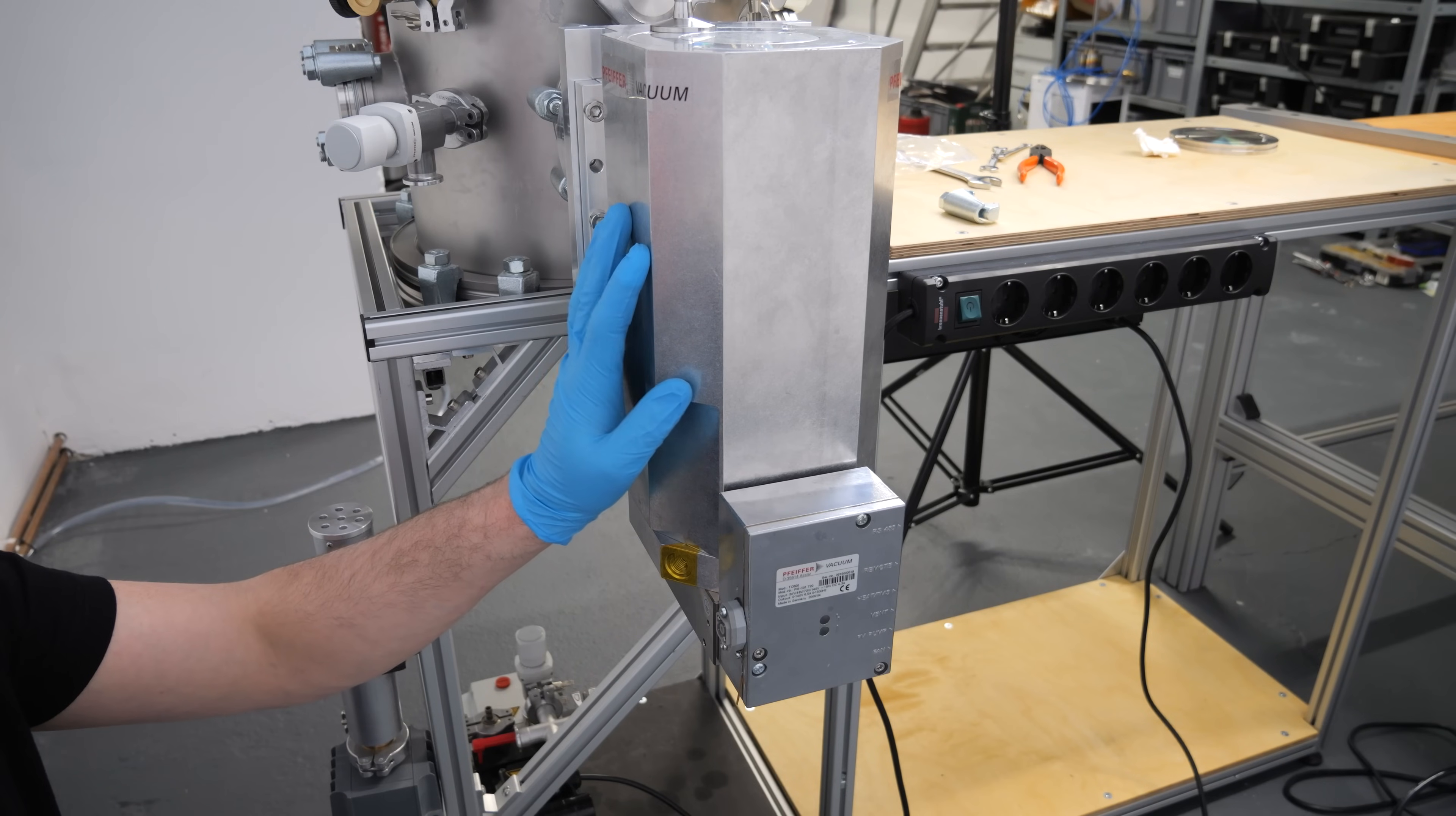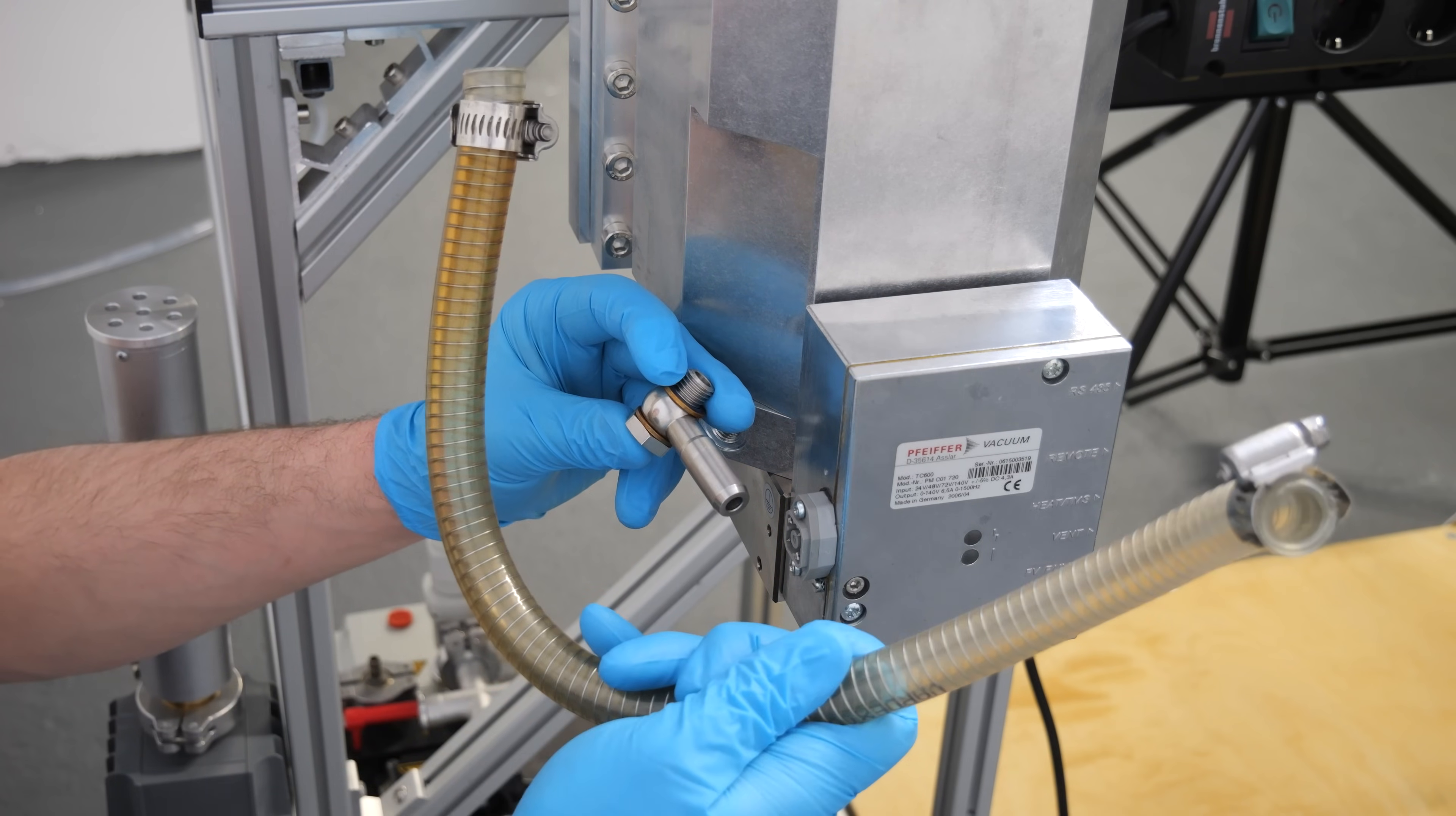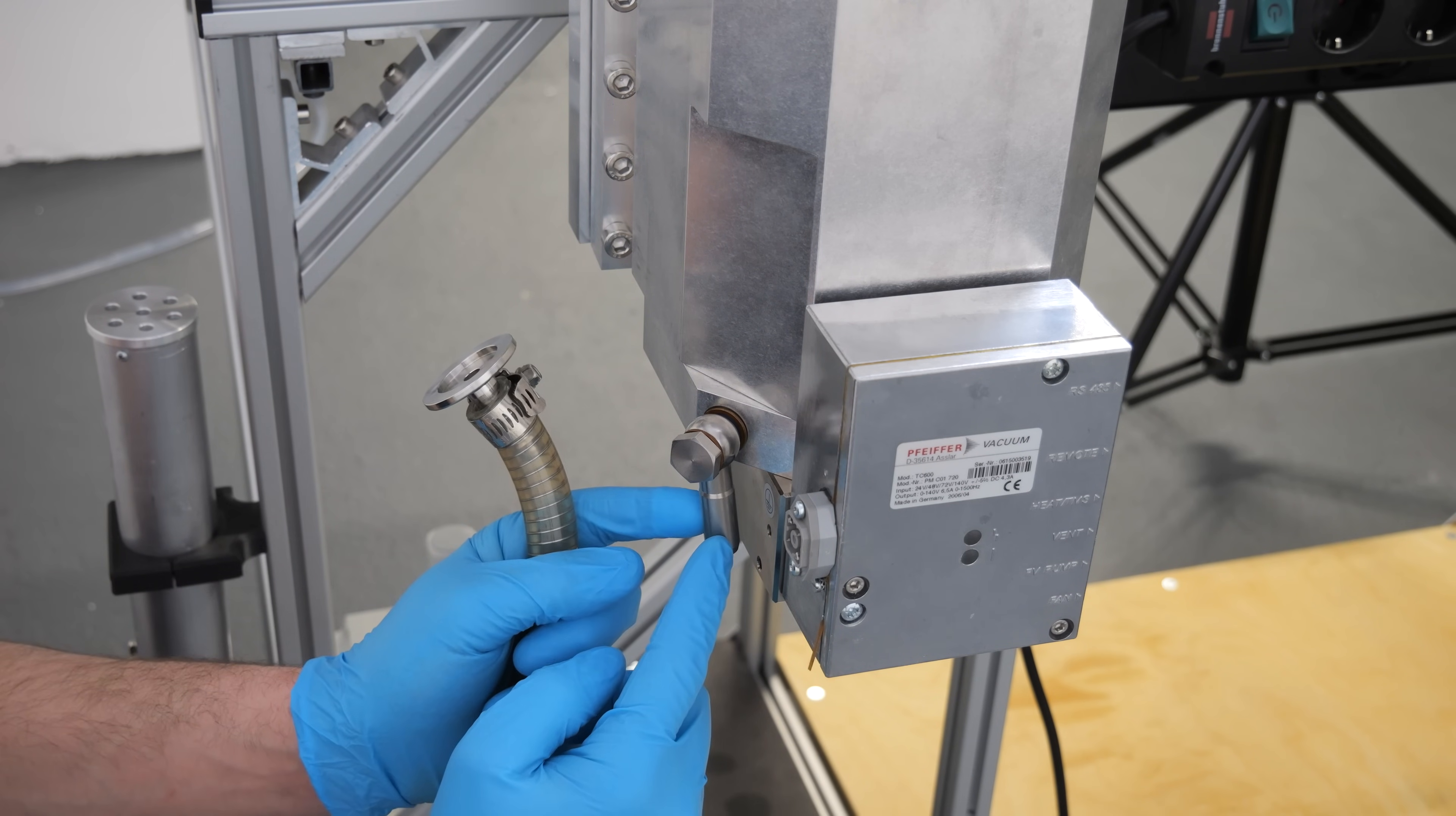Since this pump came out of a mass spectrometer there is no KF flange to attach your roughing pump. Inside the mass spectrometer the pump was just connected via this threaded hole here by using an adapter piece and a vacuum hose. Since I do not have an adapter which goes from this thread to a KF flange I will just use a short piece of this hose here to attach a KF flange to this adapter here.